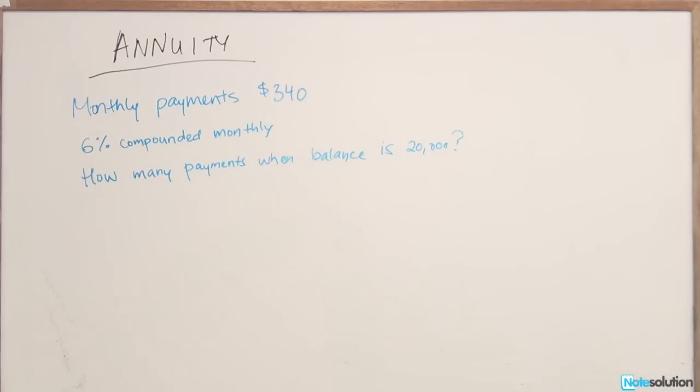The question says that we are making monthly payments of $340 into our account that earns 6% compounded monthly and tells you that at some point the account is going to be worth $20,000. How many payments will we have made by then so that the account is worth that much?